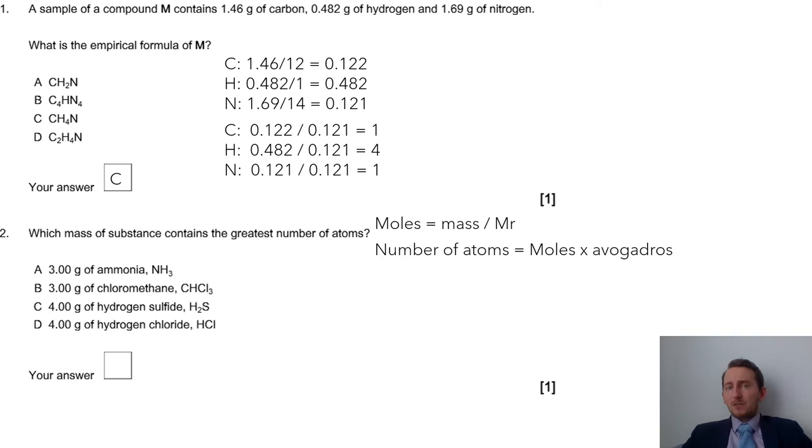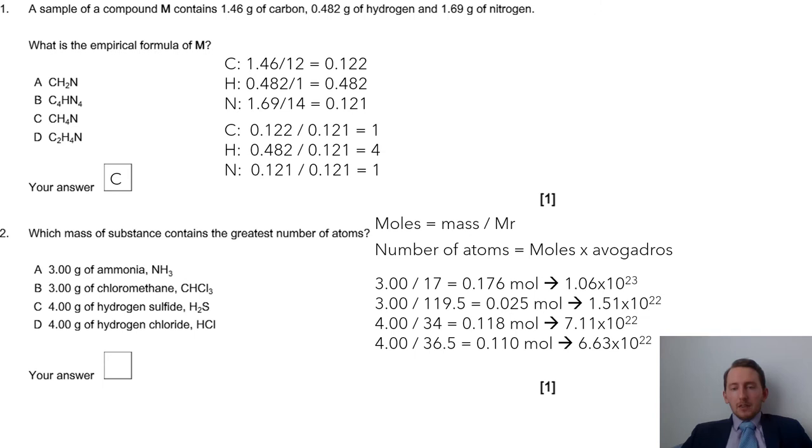Once I've worked out the number of moles, I'm going to work out how many atoms from that. So my number of atoms is the moles times Avogadro's constant. We've got 3 divided by 17, because it's 14 from nitrogen plus three lots of one from hydrogen, gives me the moles of 0.176. Then times by Avogadro's, 6.023 times 10 to 23, and then I get my answer there.